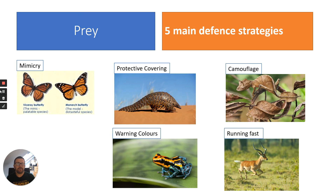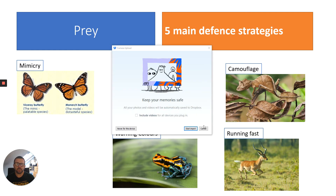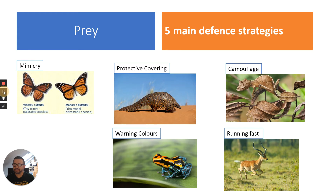In terms of prey, there are five main defence strategies. Before I start, in your AQA exam they won't expect you to know about specific examples — they will more than likely give you an example you've never seen before and ask you to apply your knowledge. So here are five main defence strategies; there are probably more, but these are quite common ones.